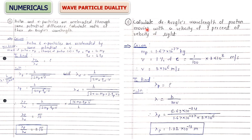Next: calculate de Broglie wavelength of a proton moving with velocity equal to 1% of the speed of light. Velocity = (1/100) × 3 × 10⁸ = 3 × 10⁶ m/s. Velocity is given directly, so use λ = h/mv with mass of proton to find the wavelength of the proton.